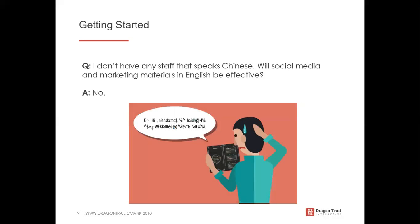The next question is about language: I don't have any staff that speaks Chinese — will social media and marketing materials in English be effective? The short answer is no. Even though younger travelers have high English proficiency and can function in English at the destination, they prefer doing their research in their native language. There's also so much information in Chinese online that they'll likely read that instead. Having information in Chinese also signifies a welcoming attitude towards Chinese tourists.